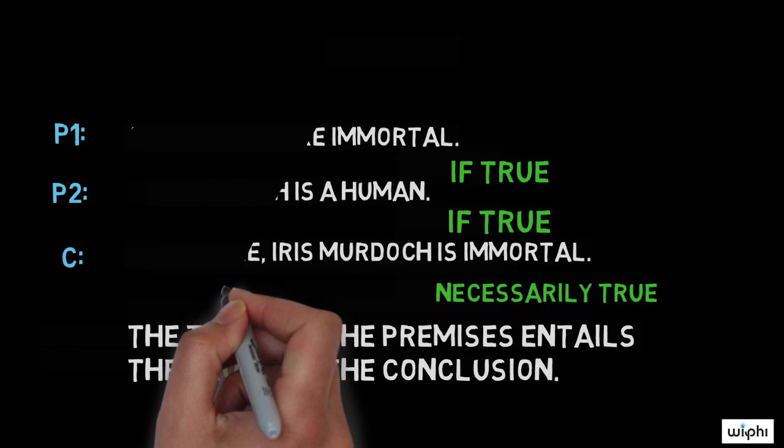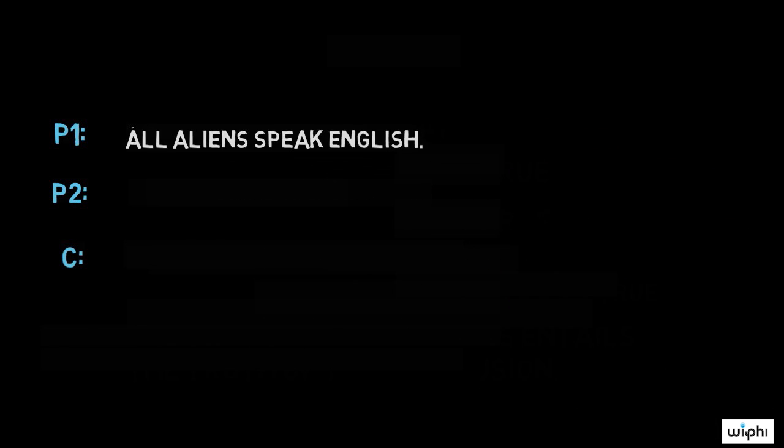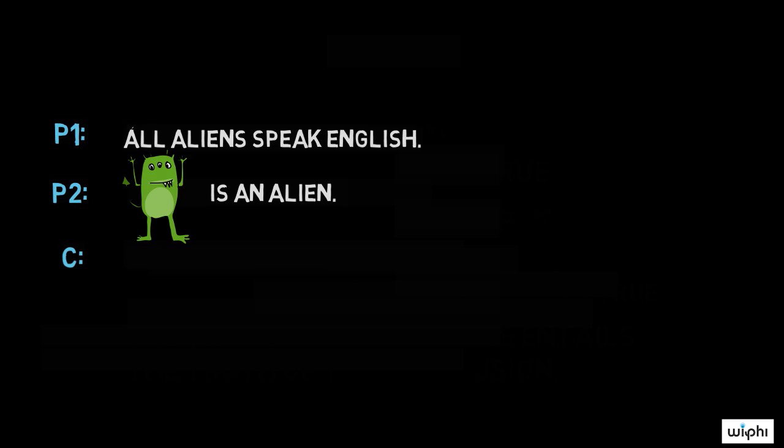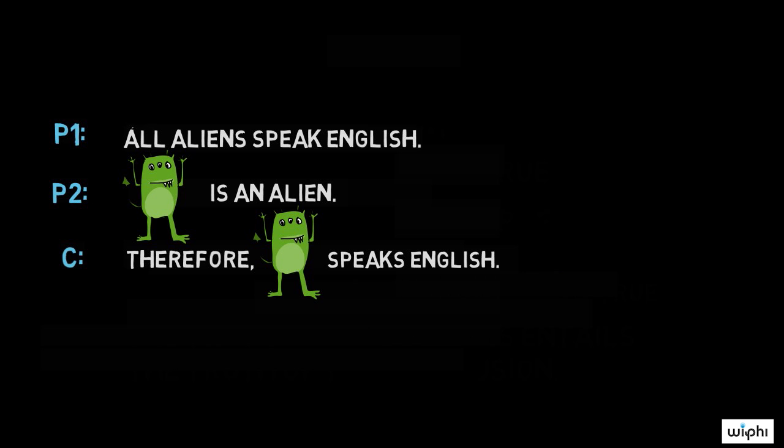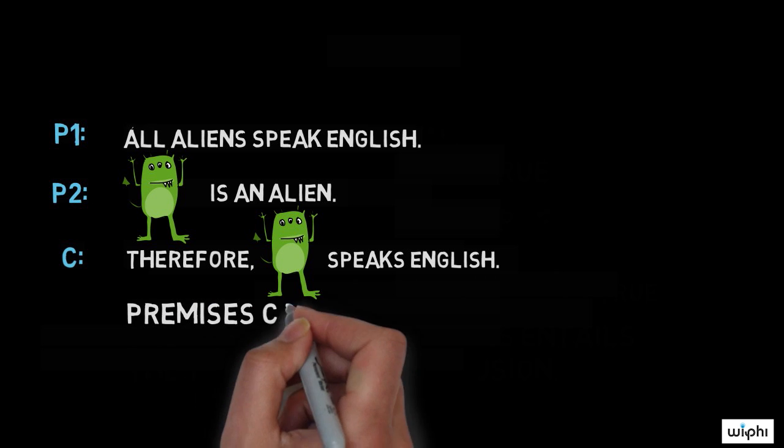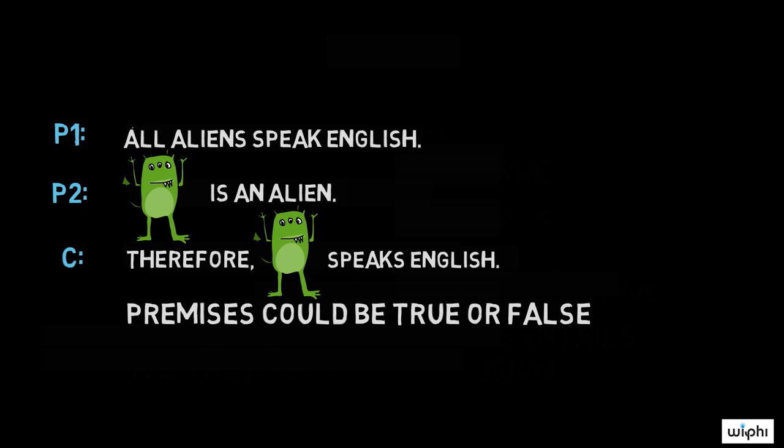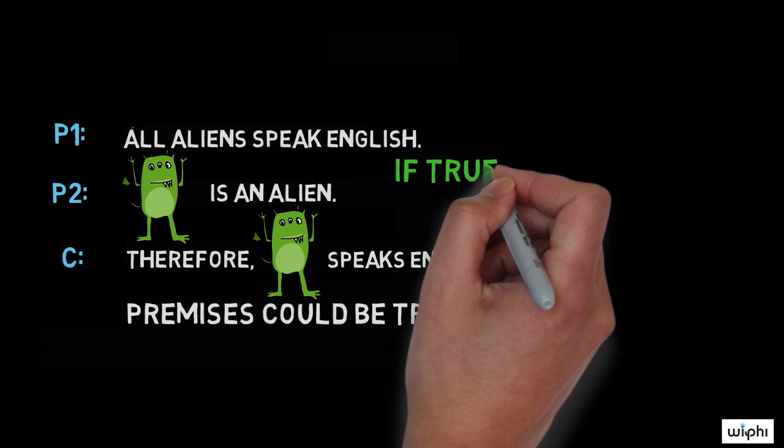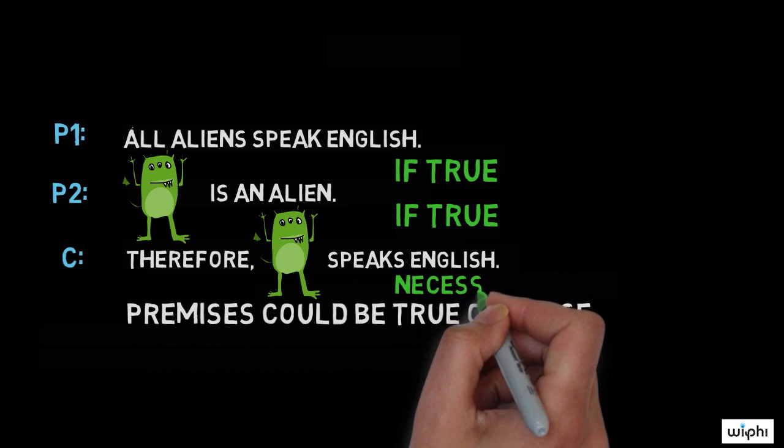Let's try an example with premises of which we don't know the truth. We don't know if there are aliens, let alone ones that can speak at all. We don't know if they speak English. It could be the case or it couldn't be the case. But this argument, nonetheless, is valid. If premise 1 and 2 are true, then the conclusion must be true.